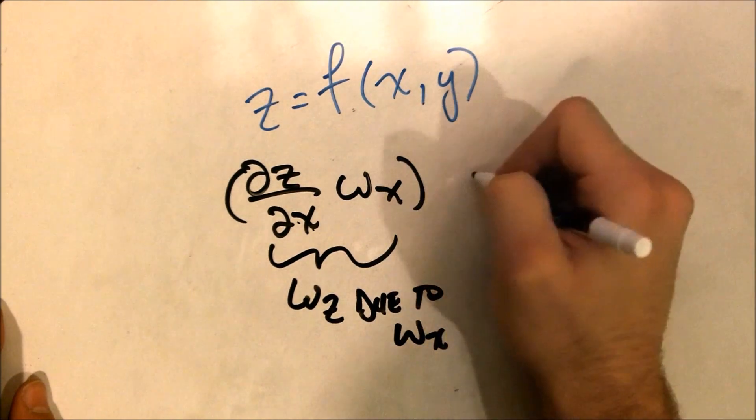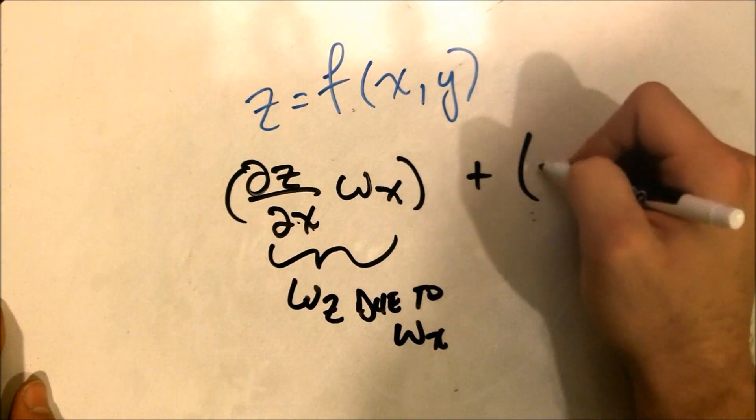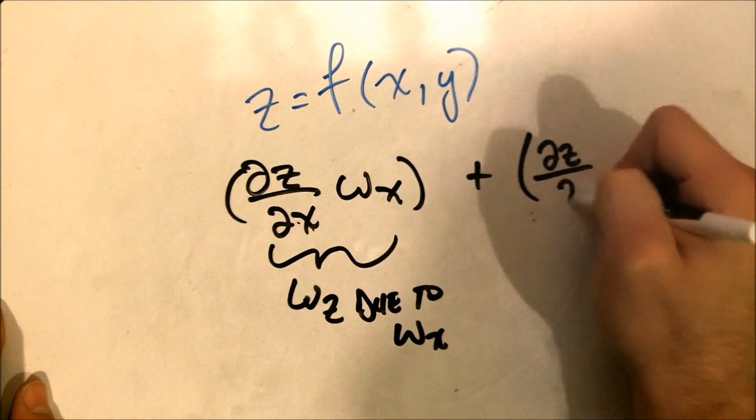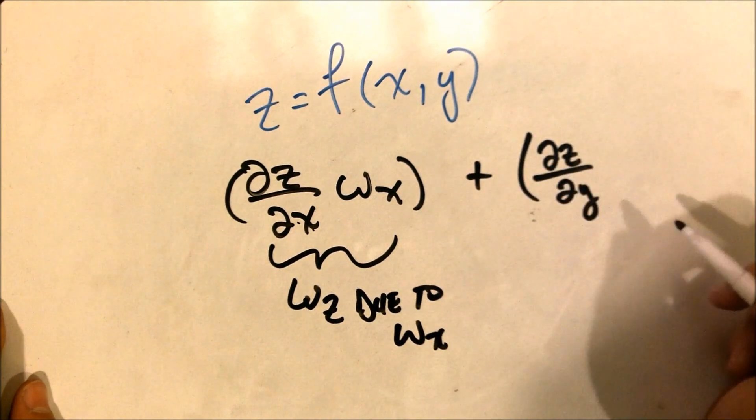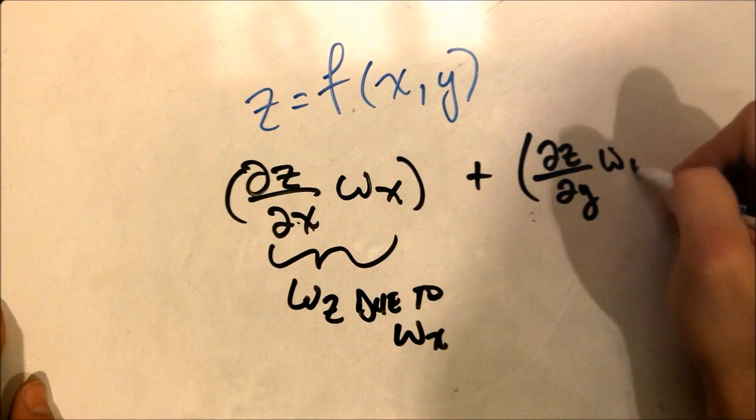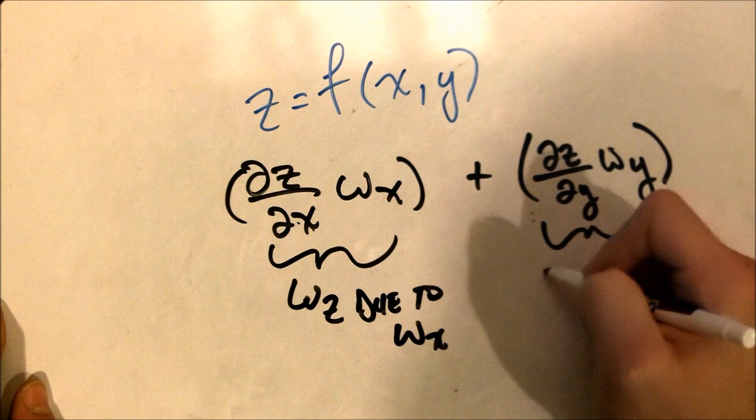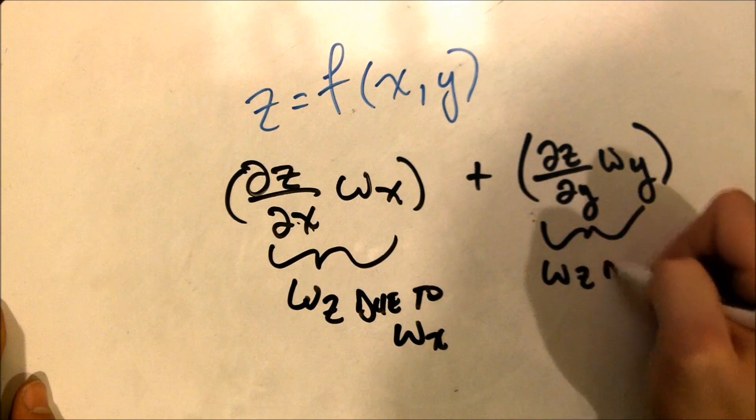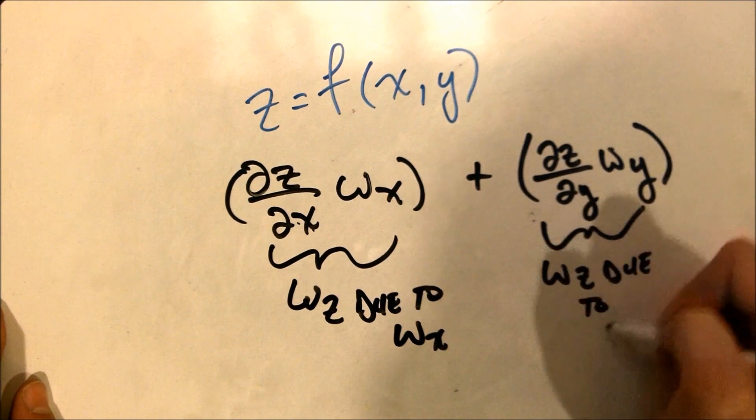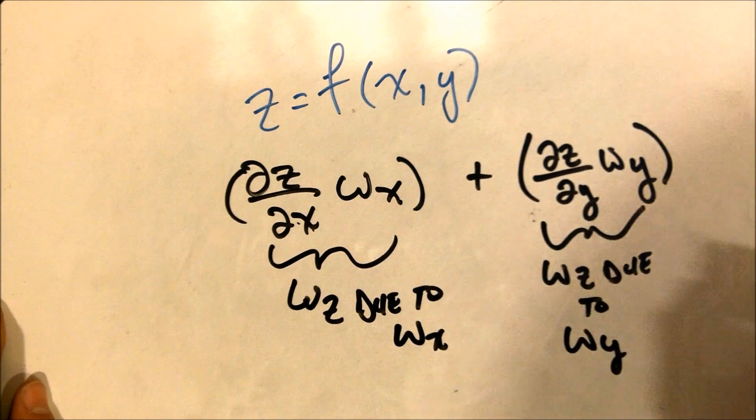And then we're going to have another del Z by del Y because we have to do this for the other variable as well. There's another variable involved, and it's got its own associated uncertainty. And so this is omega-Z due to omega-Y. The question is, how do we combine these?